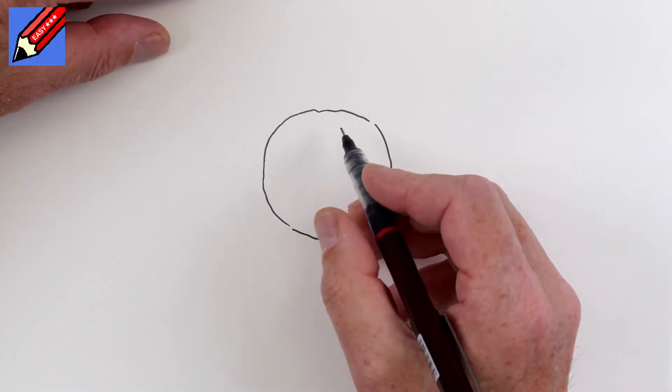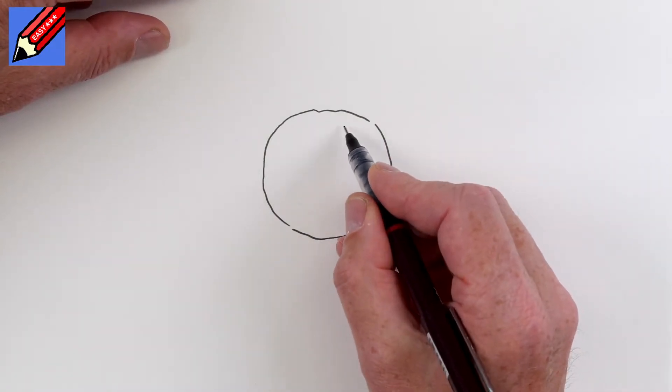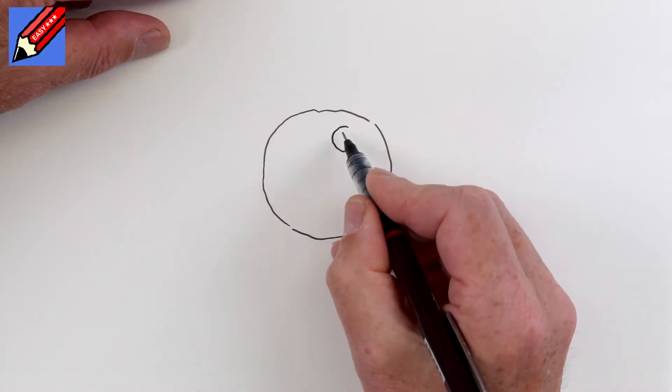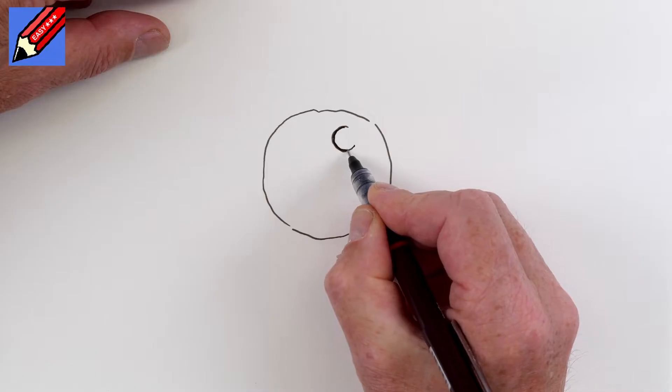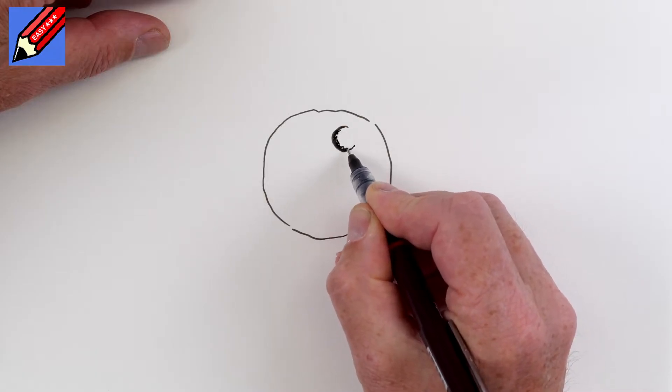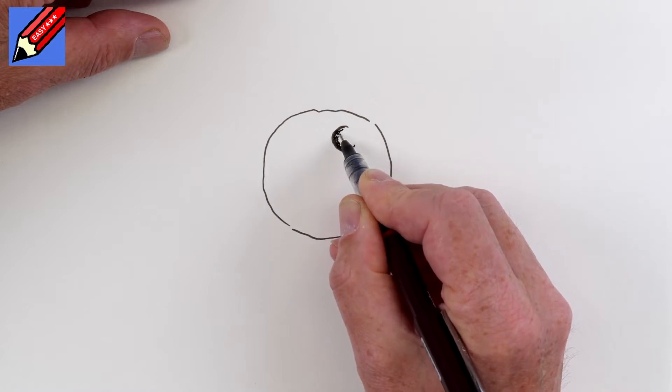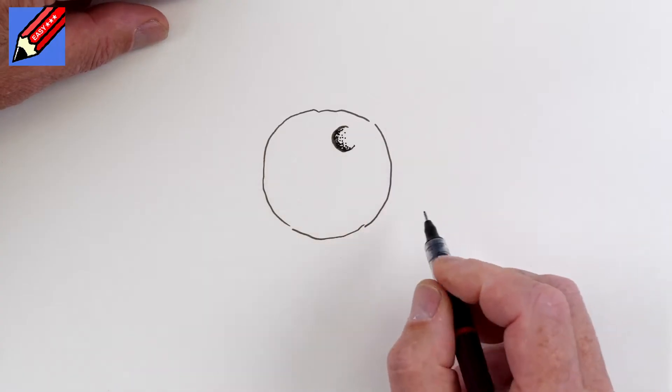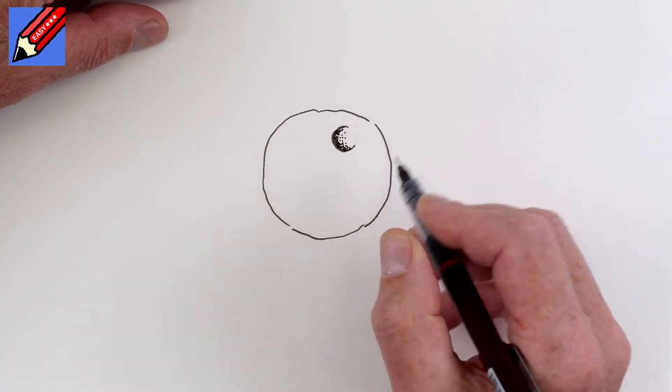And then we're going to fill it full of craters. And to do that, we're going to draw like a letter C. And then we're going to draw a bit more inside it. And then we're going to put dots in there like that. And then these dots will get further and further apart the further you are away from the edge of the C.